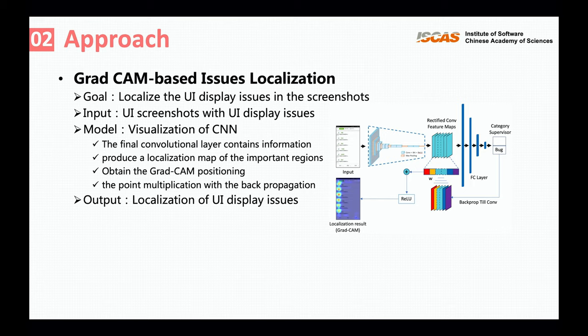As shown in the figure, we apply the GradCAM model for localization of UI display issues. As the final convolutional layer of the CNN model contains spatial information, it can use class-specific gradient information flowing into the final convolutional layer to produce a localization map. We then use this localization map as the issue localization result.